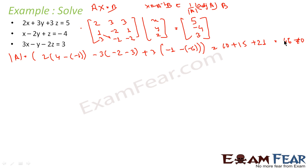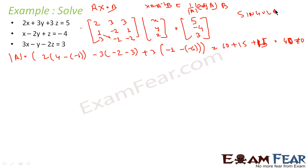I think I made a calculation mistake — minus 1 plus 6 is 5, so 5 into 3 is 15. So the last term should be 15, giving 10 plus 15 plus 15 = 40. So the determinant is 40, which is still not equal to 0. Therefore, the determinant of A is not equal to 0, so it is non-singular, and the system has a consistent solution.